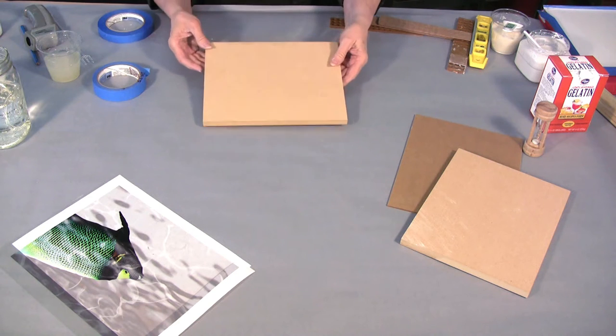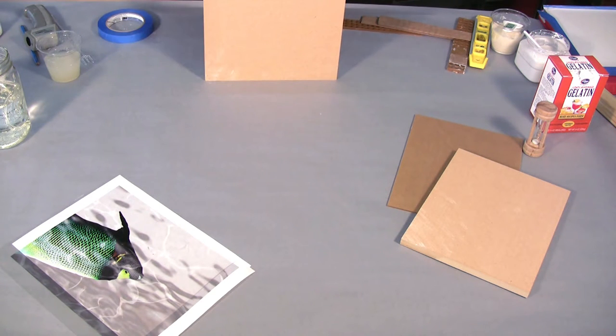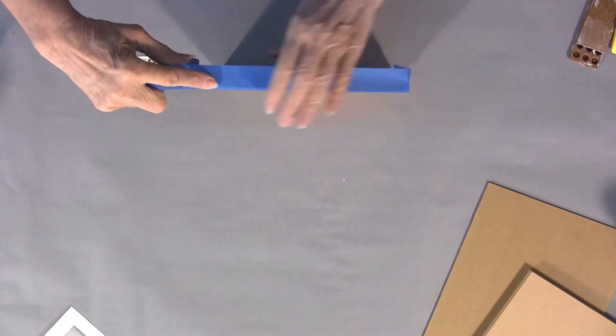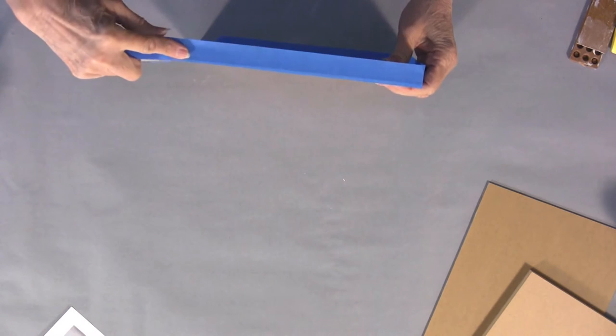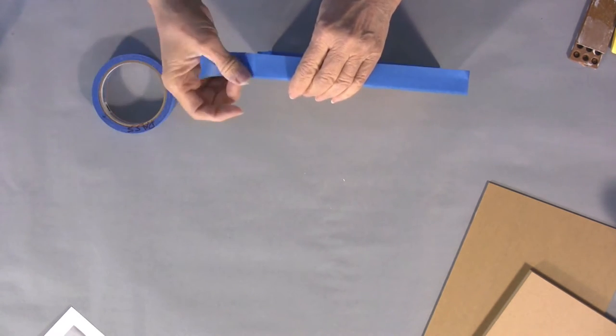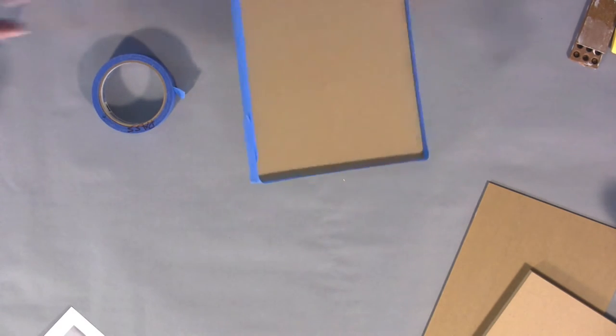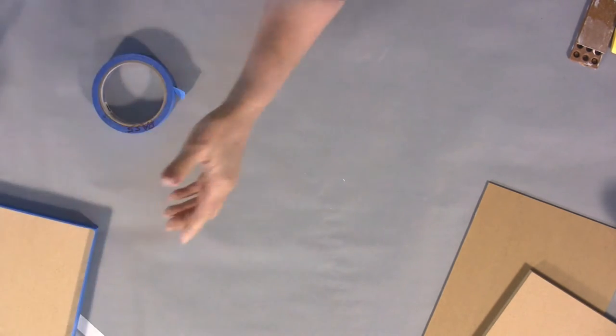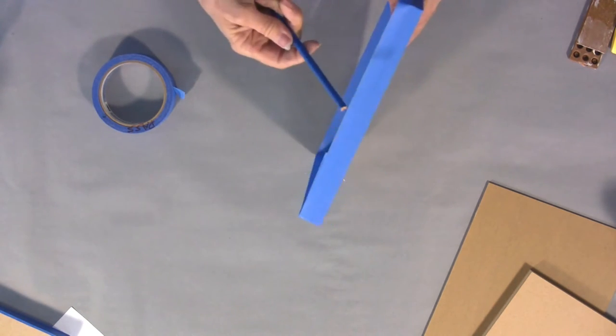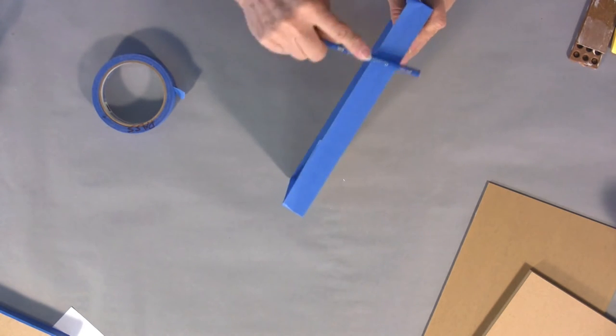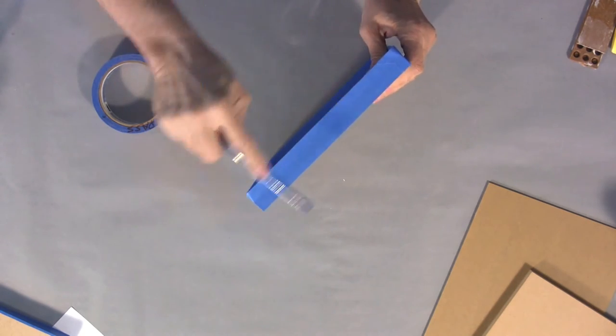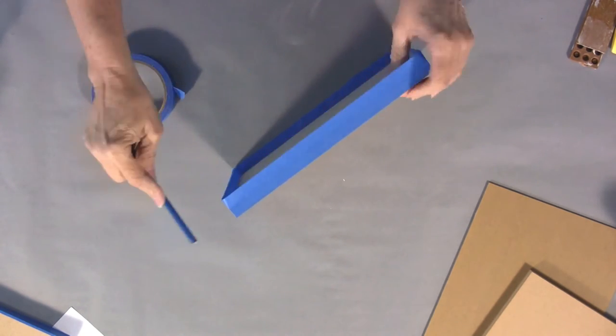I'll surround this board so that the gelatin when we pour it will stay on the surface. I'm going to take some blue tape and tape it all around the edges. You're going to make two layers on all four sides. Take a round edge of a pencil and press this down really tightly on all sides. We don't want the warm gelatin to be leaking out.